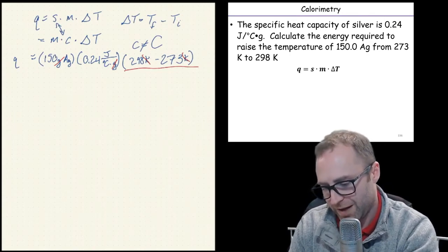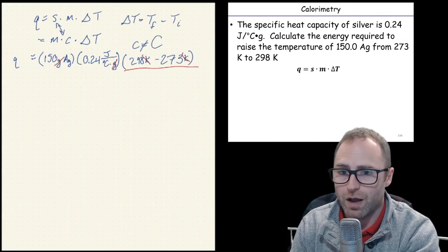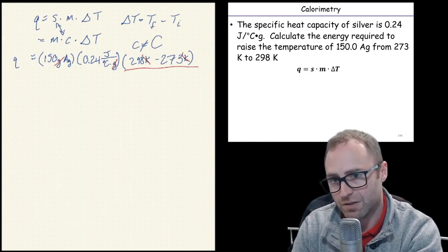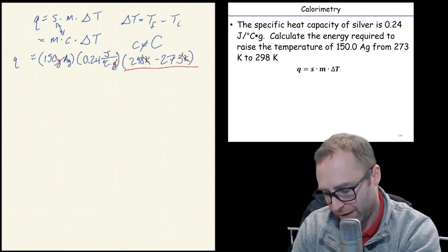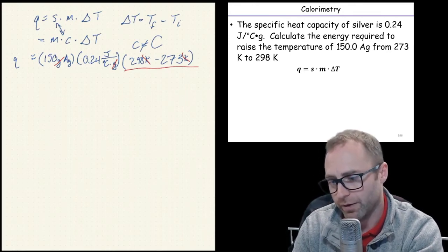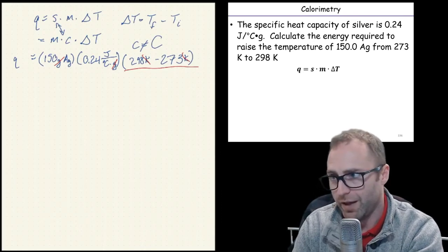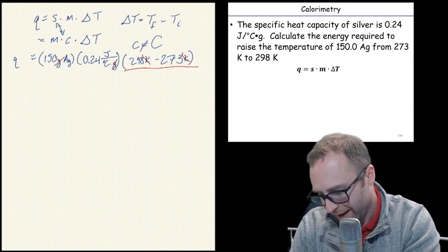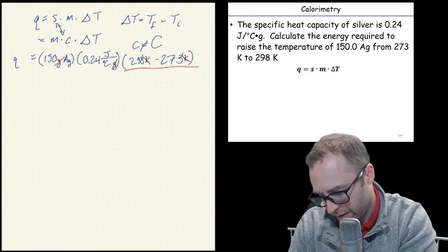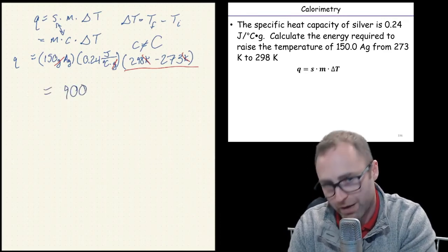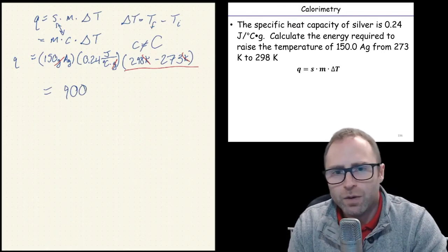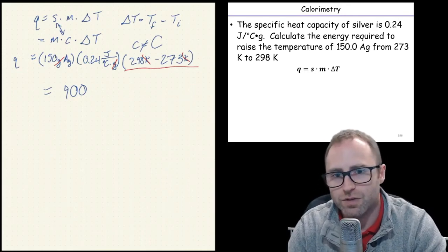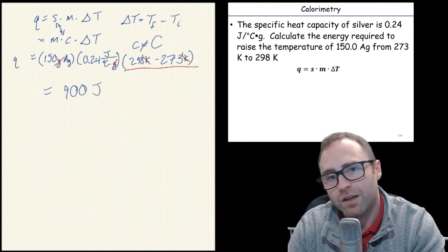So that 150 times 0.24 times, and depending on your calculator, you're either going to do the subtraction first, and then you're going to multiply everything out, or you're going to use parentheses or brackets or something like that, so that you let your calculator remember, hey, I need to do the subtraction before I do all the rest of this. Otherwise, it's going to try to multiply the first three numbers and then subtract the last number. And I ended up with a number of 900. And hopefully you did, too. What are the units going to be here? Joules. Joules, yeah. It's literally the only thing we got left. Everything else got canceled.